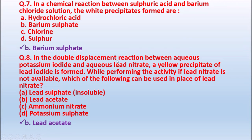Question 8: In the double displacement reaction between aqueous potassium iodide and aqueous lead nitrate, a yellow precipitate of lead iodide is formed. If lead nitrate is not available, which substance can be used in its place? The correct answer is lead acetate — in place of lead nitrate, we use lead acetate.